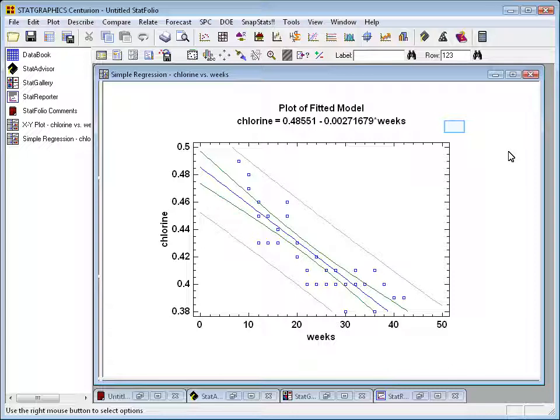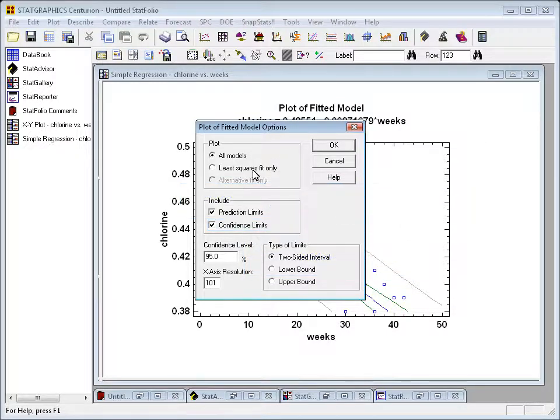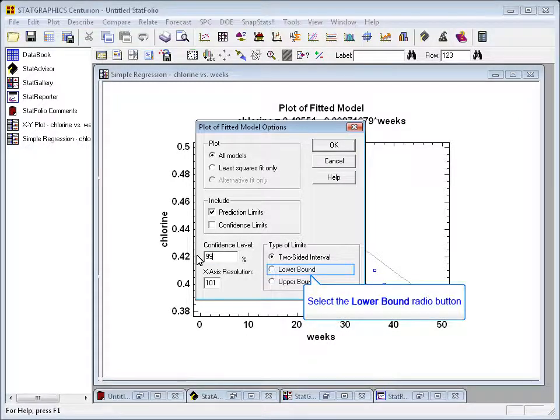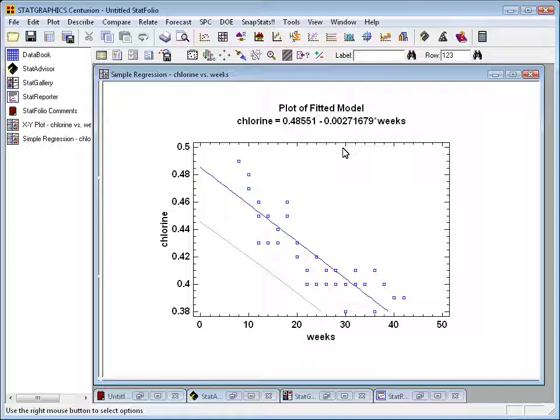Now, to answer the question I'm interested in, I'm going to click the right mouse button and go to Pane Options. The first thing I'll do is turn off the confidence limits, because it's the prediction limits I'm really interested in. I'll change the confidence level from 95 to 99%, and then change the type of limits to lower bounds. If I press OK, you'll see now the line of best fit going through the points and a lower 99% bound as a function of X. The idea of that lower 99% bound is that there's a 99% chance if I obtain a future sample of the product that it will be above that bound.